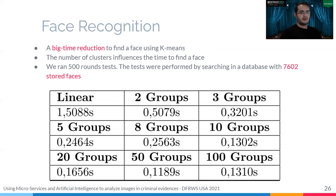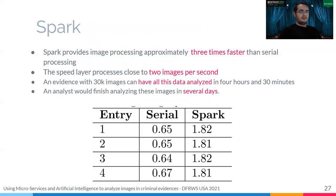Compared with the linear algorithm using 10 groups, we can find a face about 10 times faster. After testing the speed layer, we computed that Spark provides image processing approximately three times faster than the serial process. The speed layer processes close to two images per second, so evidence with 30,000 images can have all data analyzed in four hours and 30 minutes — whereas an analyst would finish analyzing these images in several days using the traditional method. We can conclude that this platform has a huge potential to speed up the investigation and evidence process.